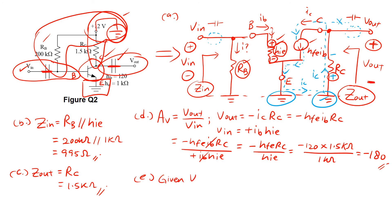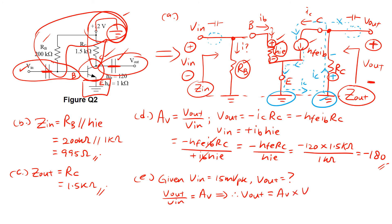For the last part, part E, we are given an input voltage of 15 millivolts peak applied to the amplifier, and we are to find the output voltage. Going back to part D, the formula for voltage gain is V-out over V-in equals AV. Therefore, V-out equals the gain multiplied by V-in. The gain is minus 180, so V-out equals minus 180 times 15 millivolts peak. The final answer for V-out is minus 2.7 volts.